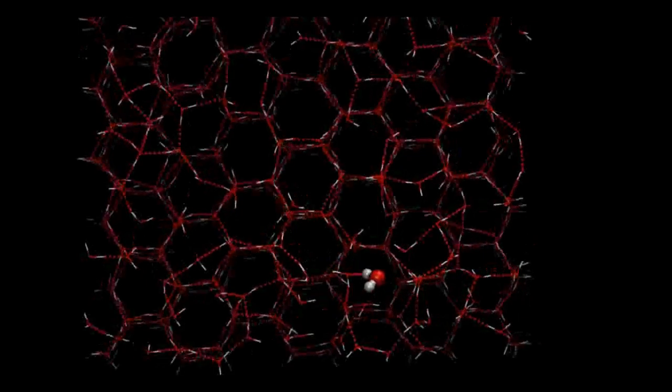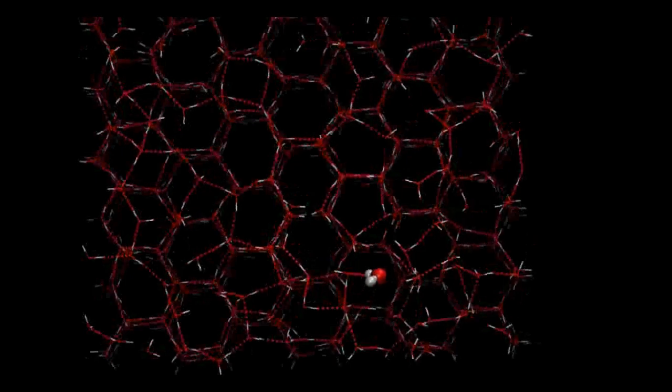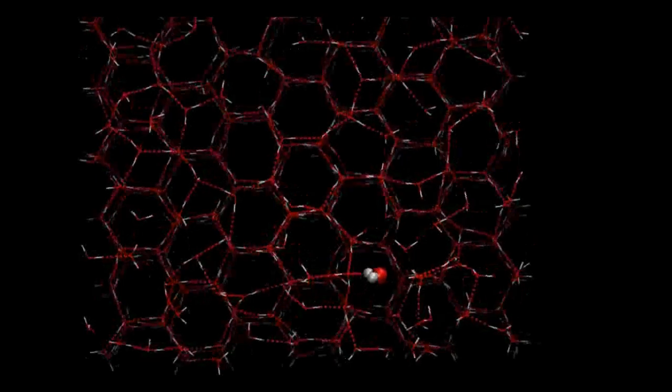This high mobility allows water molecules to fill in any defects on the ice surface very rapidly. In this fast motion video, we see that even a very deep scratch is filled in by the surface diffusion. This makes the surface very smooth, which also contributes to its slipperiness.